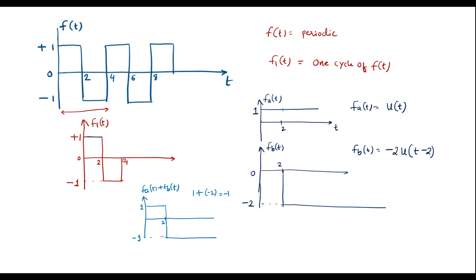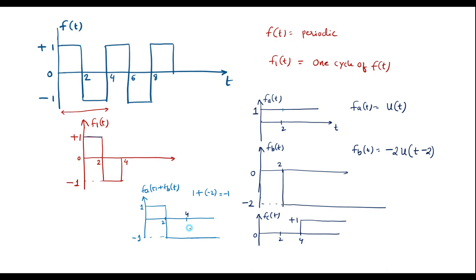Now at t = 4 this signal should become 0 — it is continuing till infinity and needs to reach 0. So I should add one more step signal at t = 4 having magnitude +1. Let that be f_c(t). At t = 4 I add a step signal of magnitude +1, because at t = 4 this signal has magnitude −1, and −1 + 1 = 0. After adding a, b, and c, the resultant signal is the same as f₁(t).